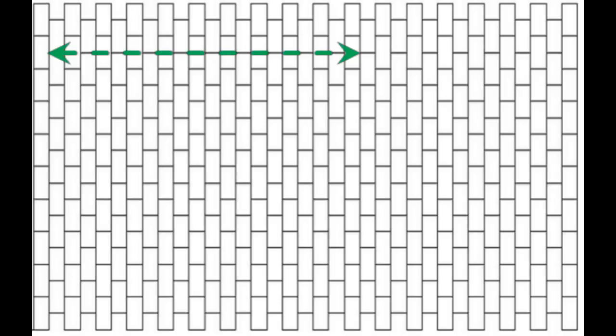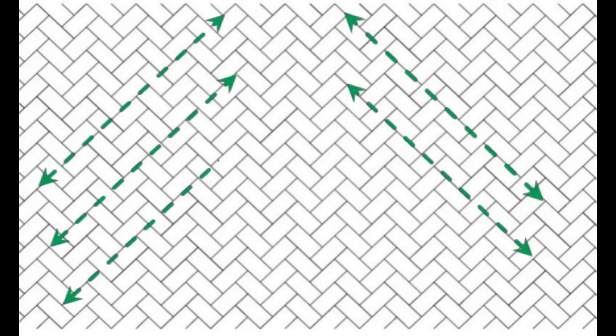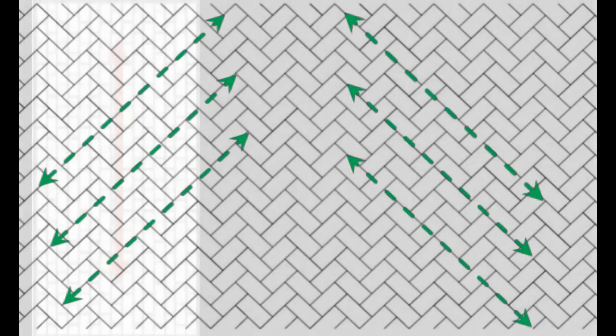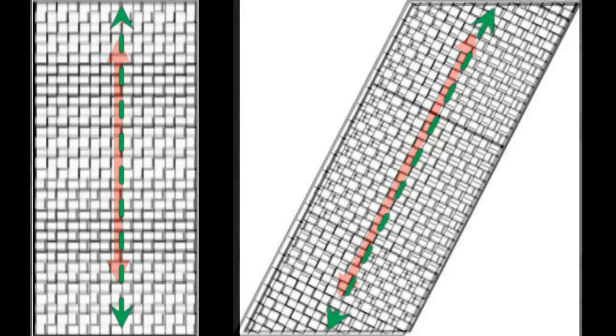Offset brick, for example, has sight lines in multiple directions. It contains broken sight lines in one direction and solid in the other. Similar to offset brick, diagonal herringbone also has sight lines in multiple directions, but contains only broken sight lines. Always avoid aligning solid sight lines with the most common direction of travel, as this can create wavy lines.